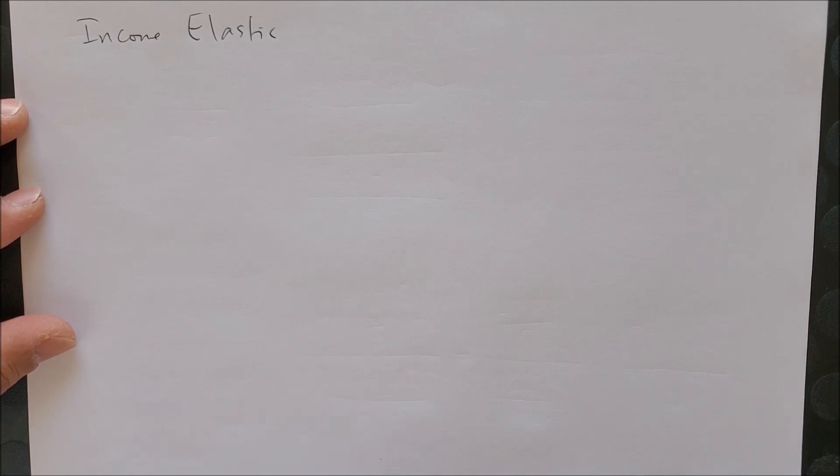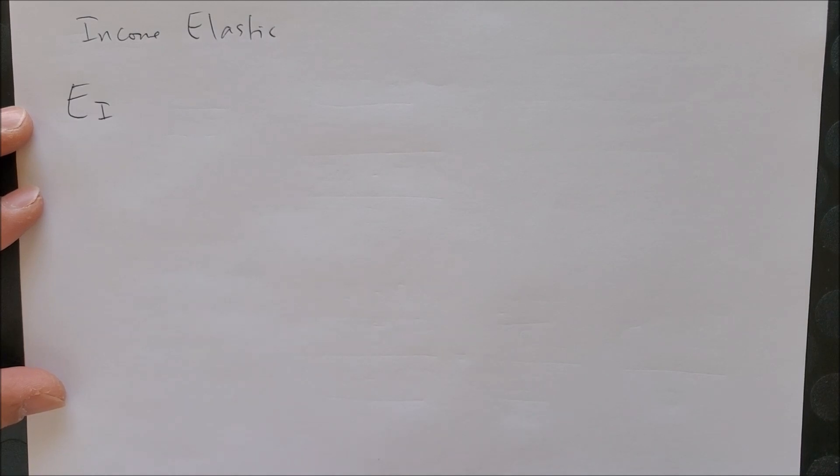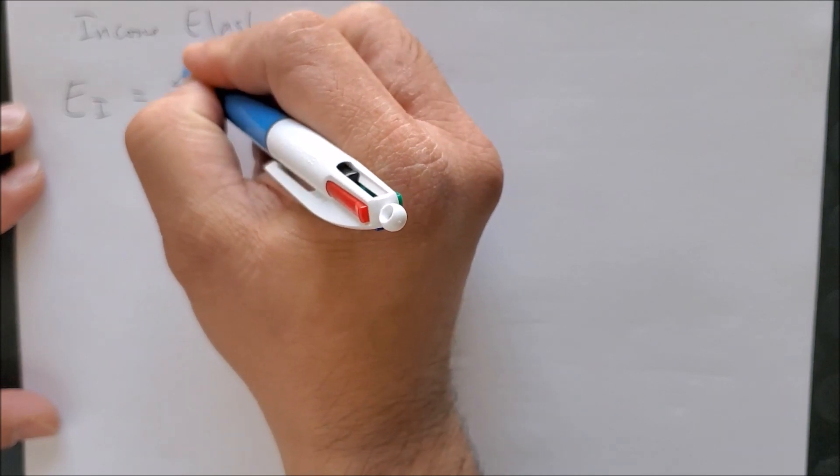Now the third equation I'm going to show you is something called the midpoint equation, also known as the arc elasticity. It allows us to use an average of the quantity and of the income, which gives us better accuracy with the numbers we get. This is very useful when we start off with zero for either quantity or for income. We have once again our income elasticity equation as E sub I.